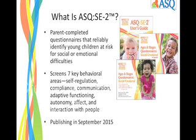The ASQ-SE2 is our second edition of the ASQ-SE, which we'll be publishing in September of this year. It identifies children who are at risk for social-emotional difficulties and looks at seven key behavioral areas: self-regulation, compliance, communication, adaptive functioning, autonomy, affect, and interaction with people.